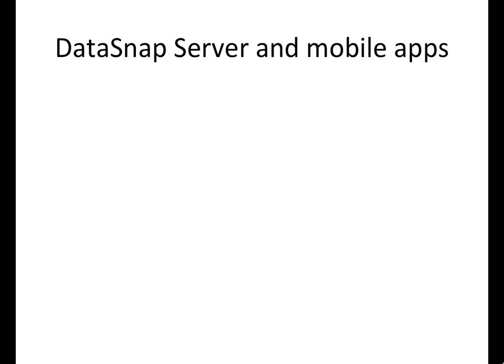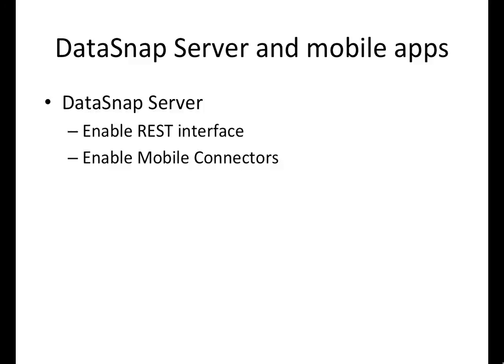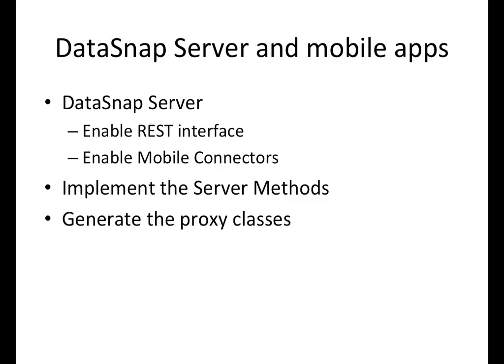In order to allow Datasnap server and mobile applications to interact with each other, you have to follow a few steps. The first one is to enable the REST interface in mobile connectors on your Datasnap server. After that, you have to expose the business logic on your server through the server methods. Having these business logics exposed to the server methods, you just need to generate the proxy class for the platform you are looking for. In this video, we are going to see how it works with Android applications.